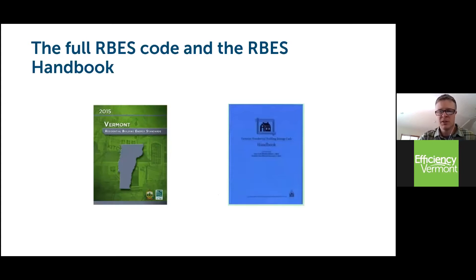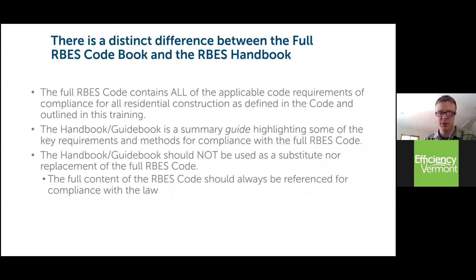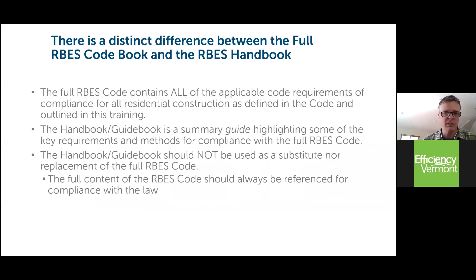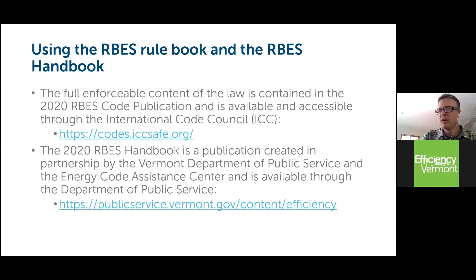One important distinction: the actual code itself is the ICC published code, while the Vermont Residential Energy Code Handbook is a publication of the Energy Code Assistance Center, run by Efficiency Vermont in partnership with the Department of Public Service. The handbook is a summary — basically the Cliff Notes — but a really good compendium of applications that help implement the code. The full code is the document that should always be referenced because that is the actual law. Both can be found on the ICC website and the Department of Public Service site.